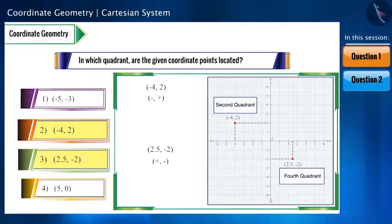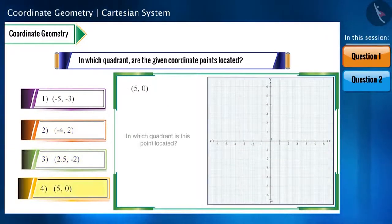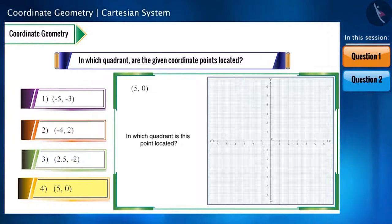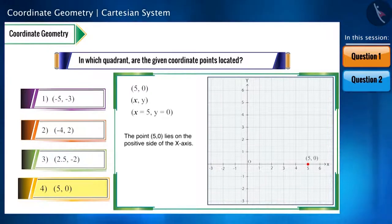Can you tell the position of the fourth coordinate point? If we see this point in XY plane, its X coordinate is 5 and Y coordinate is 0. This point is not in any quadrant, but on the positive side of the X axis at 5 units.